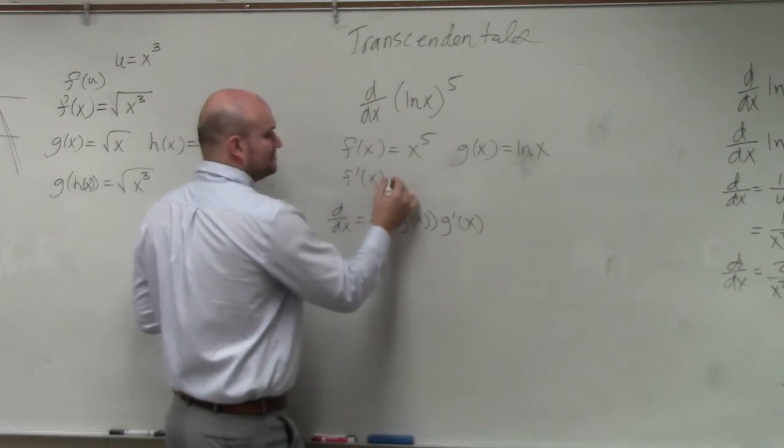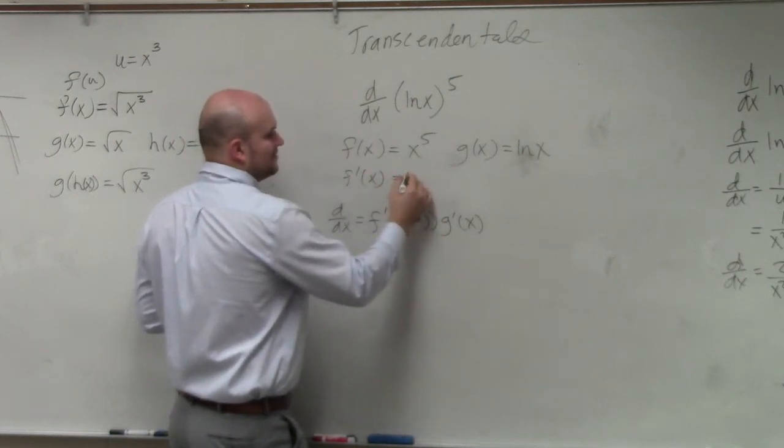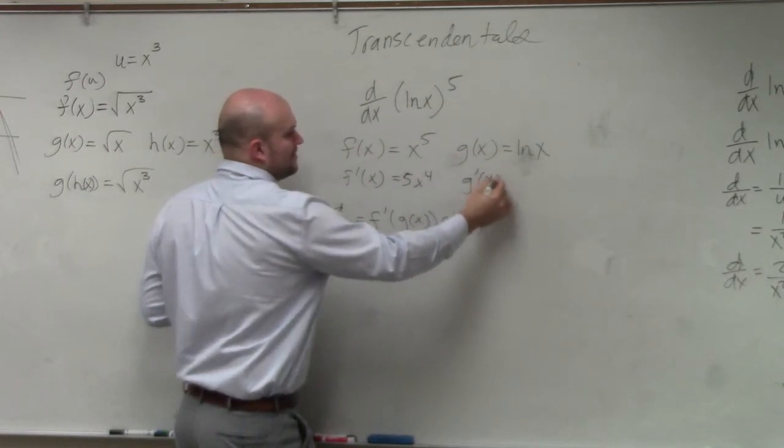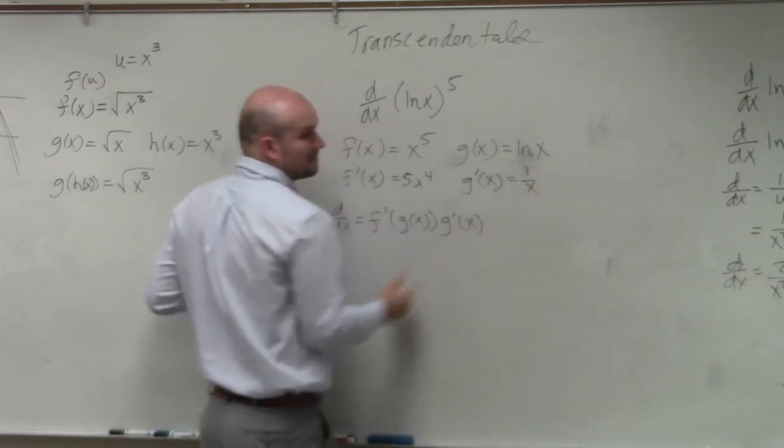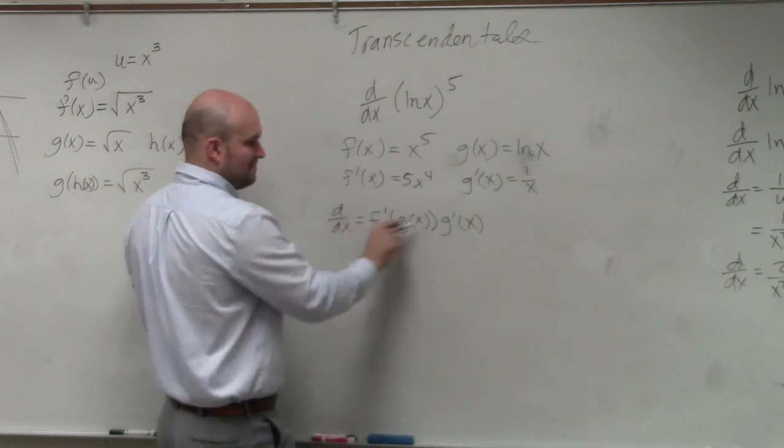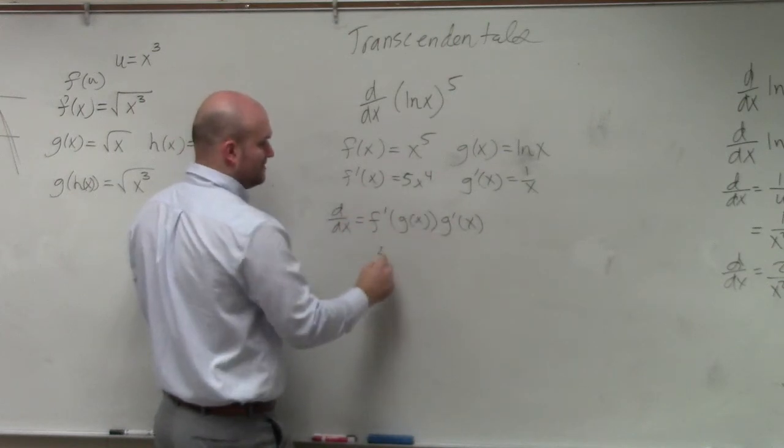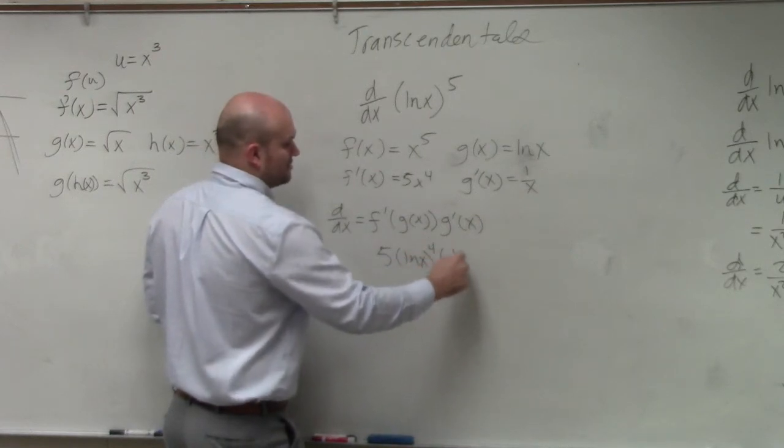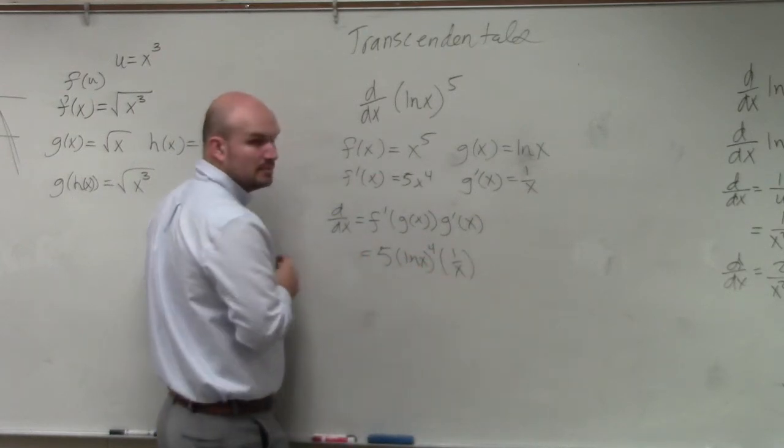So the derivative f' is 5x to the fourth and g' is 1 over x. So by using this formula, what we have is 5 times ln(x) raised to the fourth times 1 over x, correct?